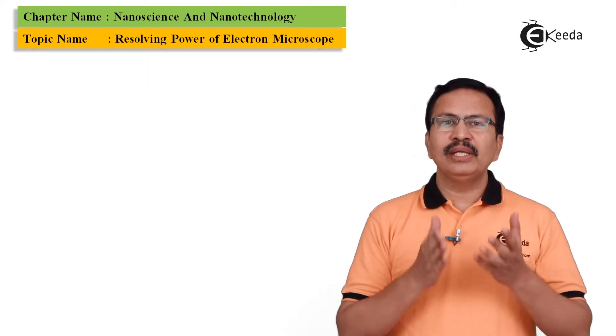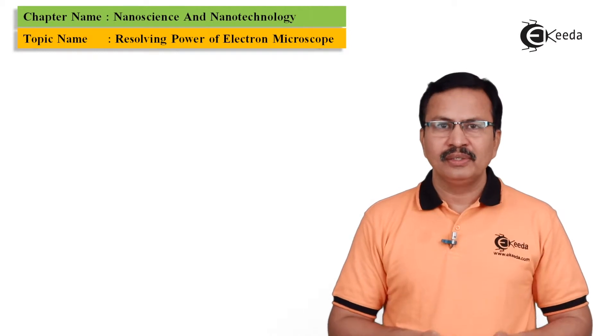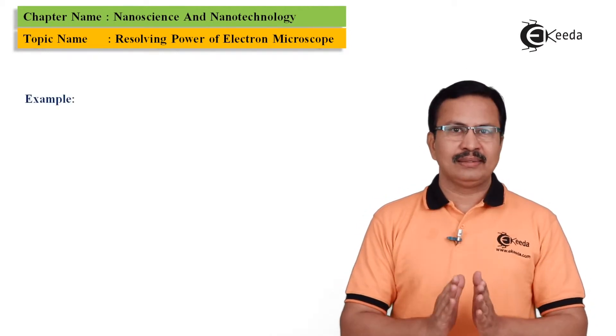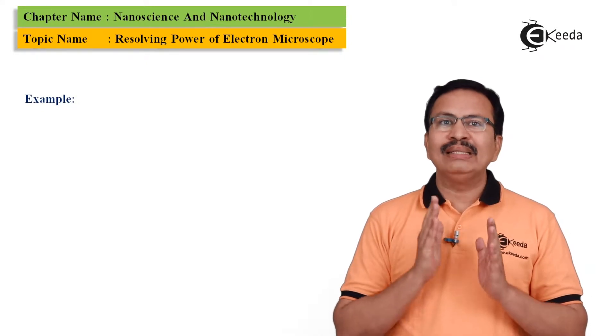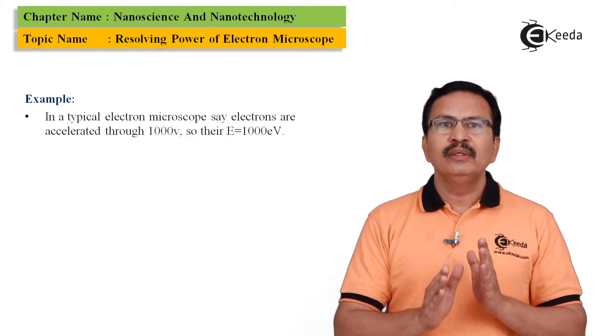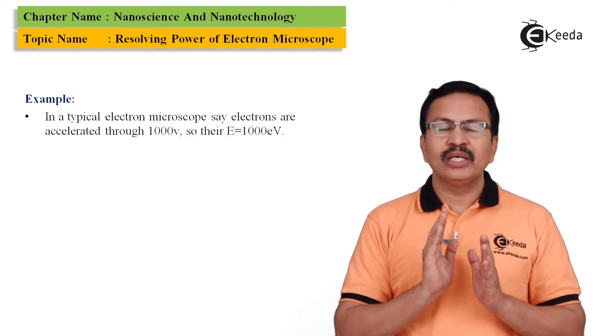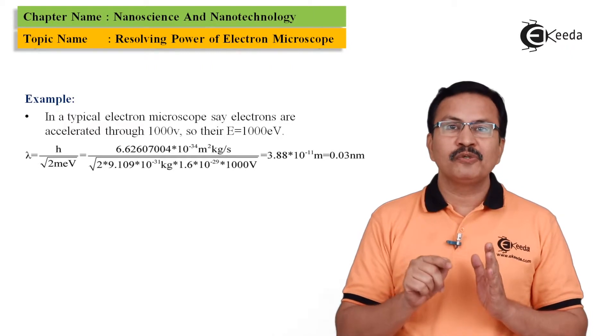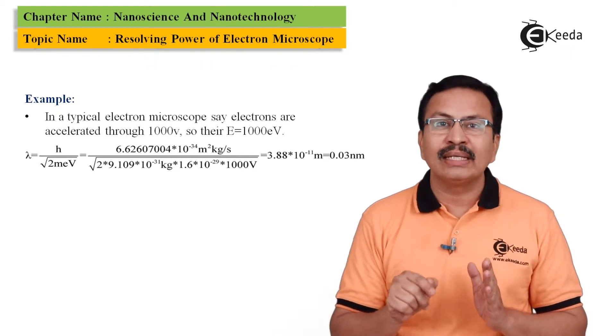The next question is how do electrons acquire energy? As you know, electrons are nothing but charged particles, and if we want to increase their velocity, this means if we want to decrease their de Broglie wavelength, because remember, λ is inversely proportional to the square root of the energy.